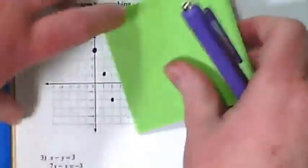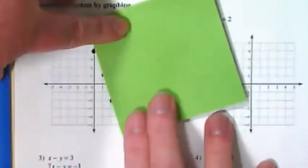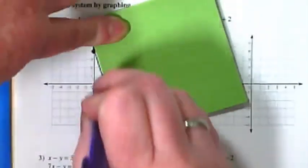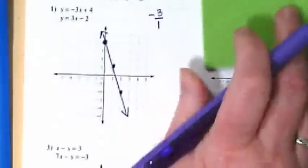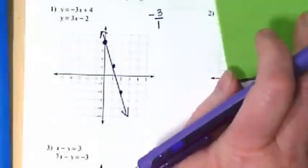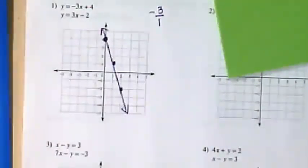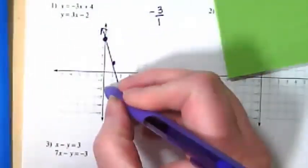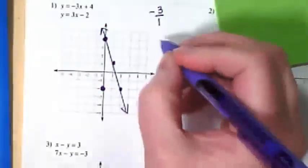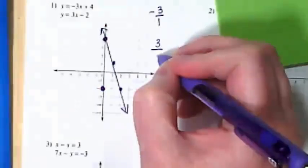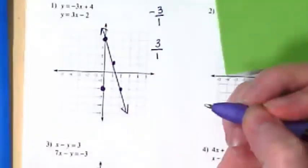And if you have anything that can act as a straight edge, maybe your notebook. And then we're going to graph the other one and see where they cross. So we're going to start down at negative 2 for our y-intercept. Our slope on this one is a positive 3. So again, it's a 3 for rise and a 1 run, but this is going to be a positive slope.